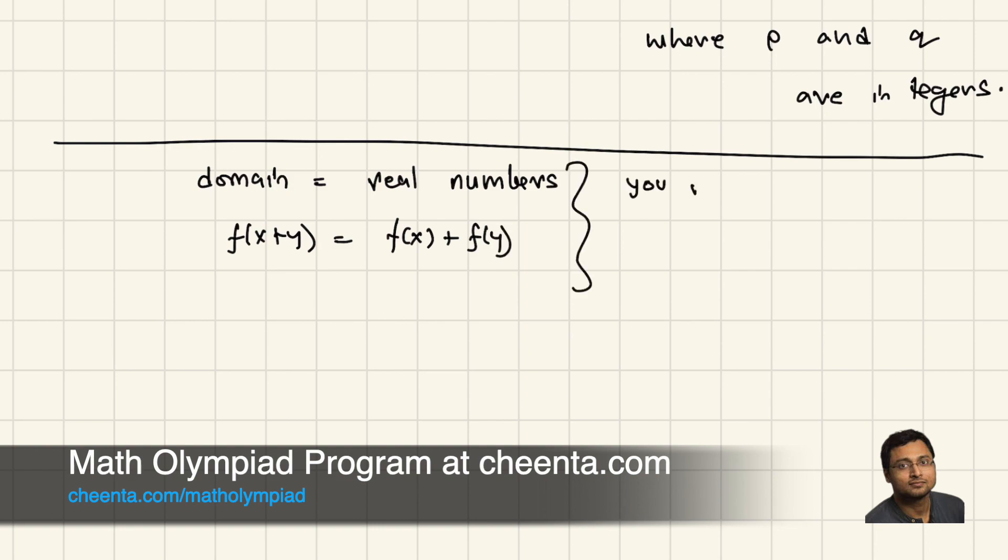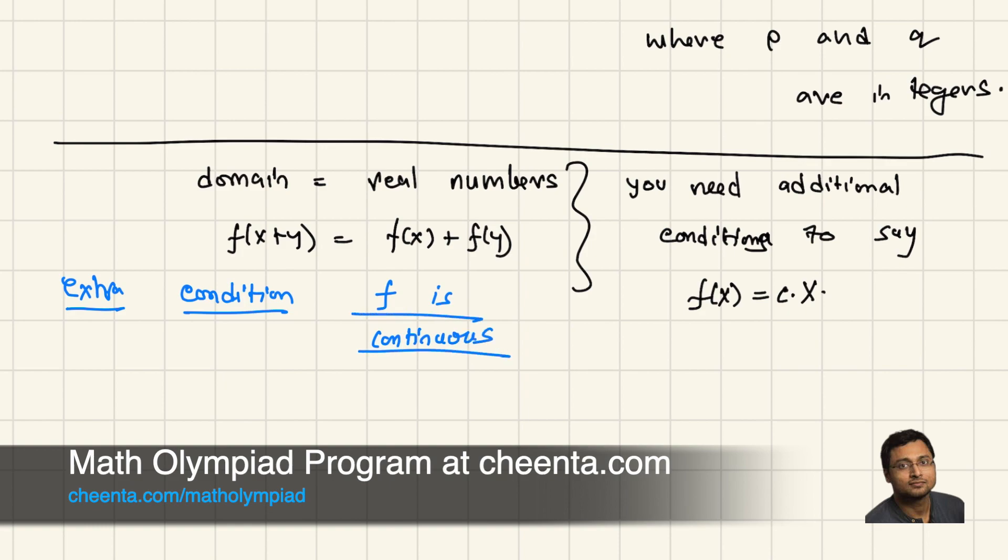and it's given that f(x + y) equals to f(x) + f(y), you need additional conditions. Additional conditions to say f(x) is equals to constant times x. So what conditions do you need? Well, I'll just give you one such condition. Extra condition given on the function. Assume that f is continuous.